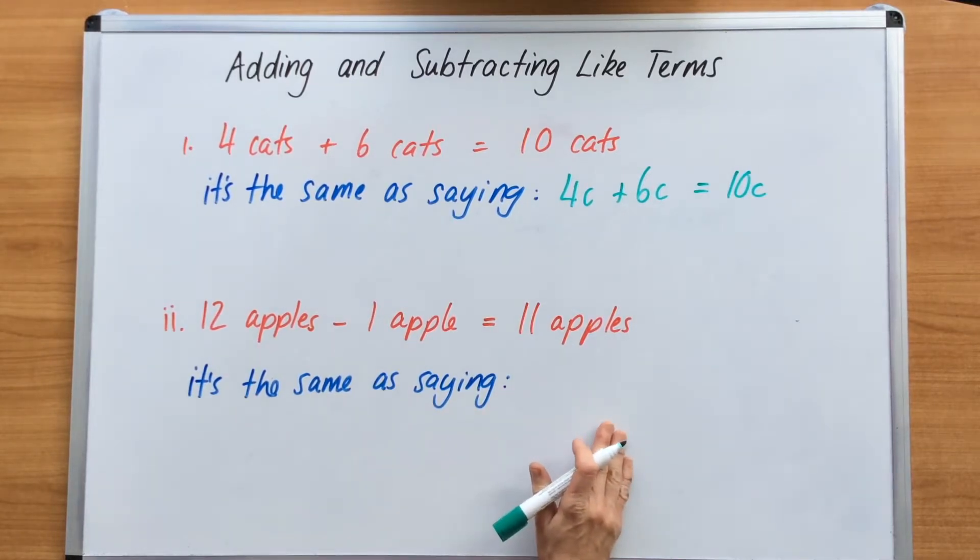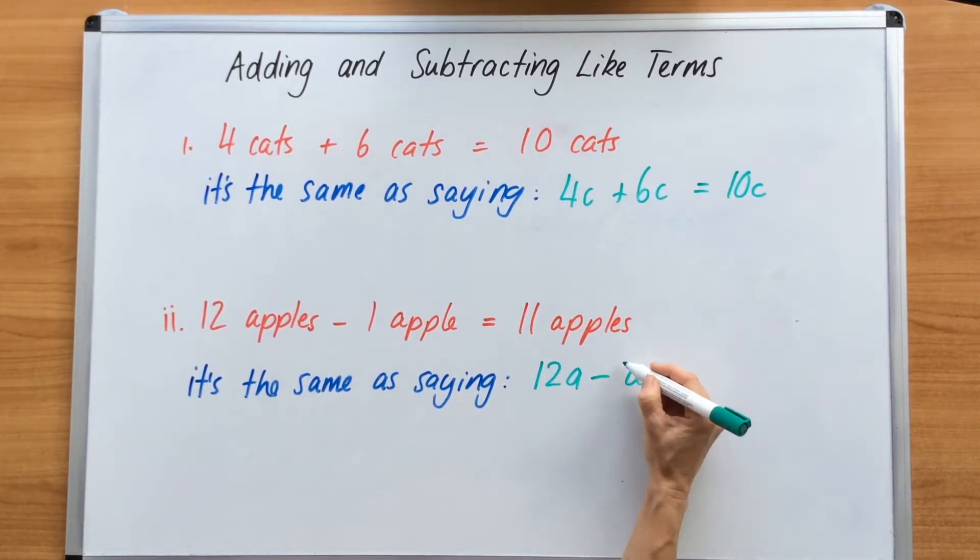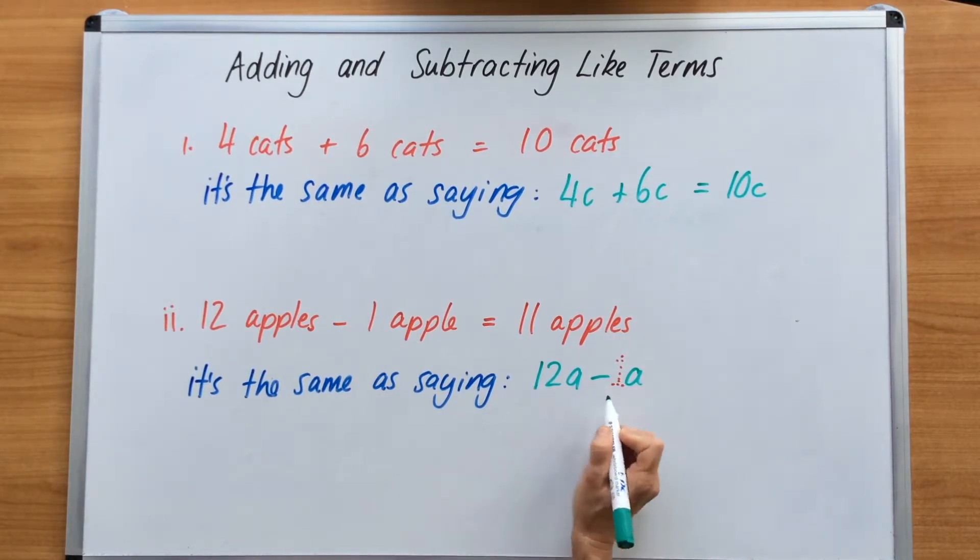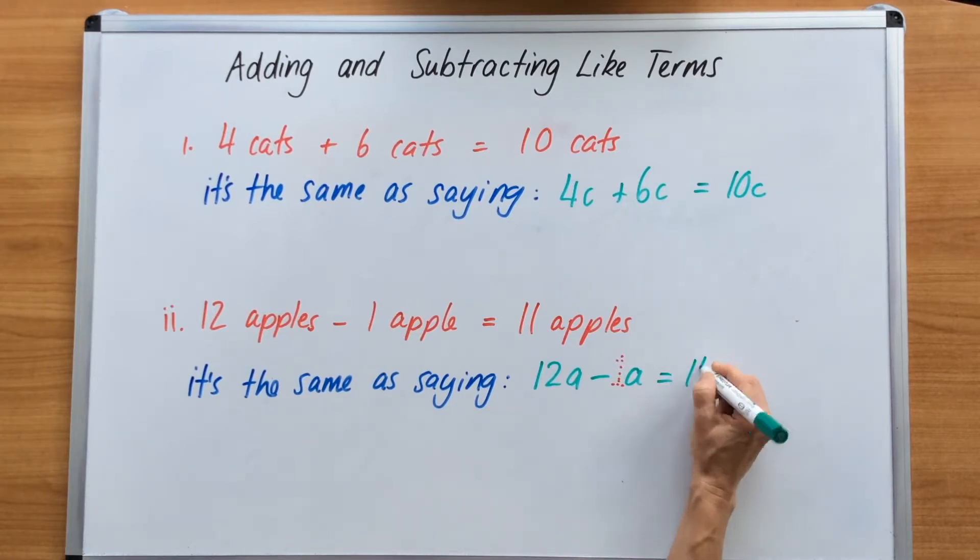And the same thing goes down here with the subtraction. We're using apples. So 12 apples minus 1 apple equals 11 apples. It's the same as saying 12A minus. Now, we don't actually put the 1 in front of a pronumeral. That 1 is invisible. So we never ever leave or put a number 1 in front of a pronumeral. It sits alone as a letter without a number. So it's 12A minus A equals 11A.